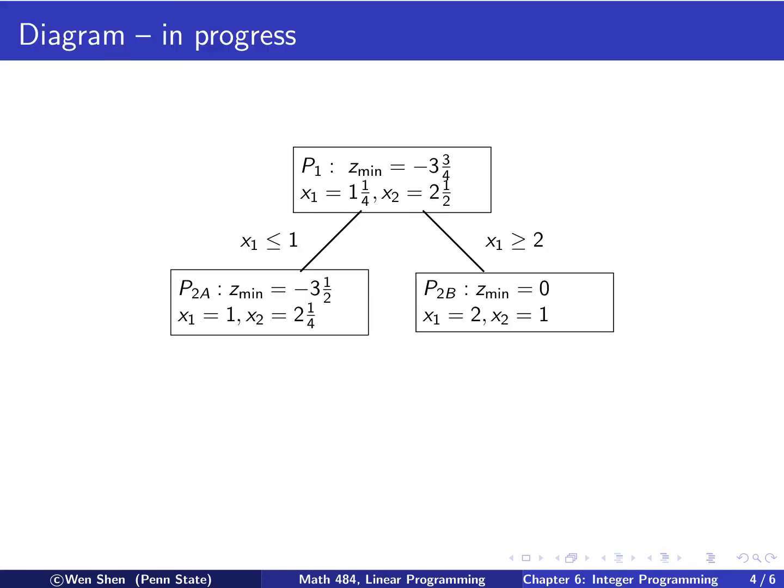So it would be useful to draw a diagram. Right now, it's just a diagram in progress. So what I listed here is, at the top of the diagram, this is the solution of the initial problem by neglecting the integral constraint. And that's the solution. So p1, I repeated the solution. And since this is not integral, so we branch out by having two branches, one to the left, one to the right. And then with the exclusive additional constraint, x1 is less than 1 here, x1 is bigger than 2. Then I have two problems, 2a and 2b. And then I record the solution here.